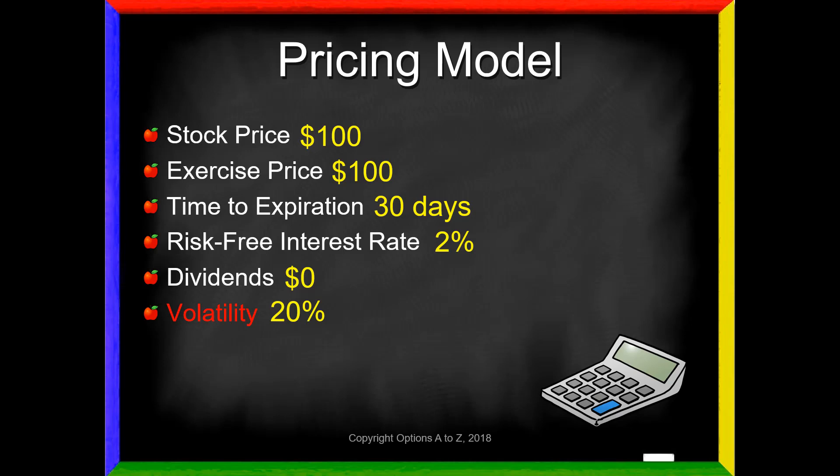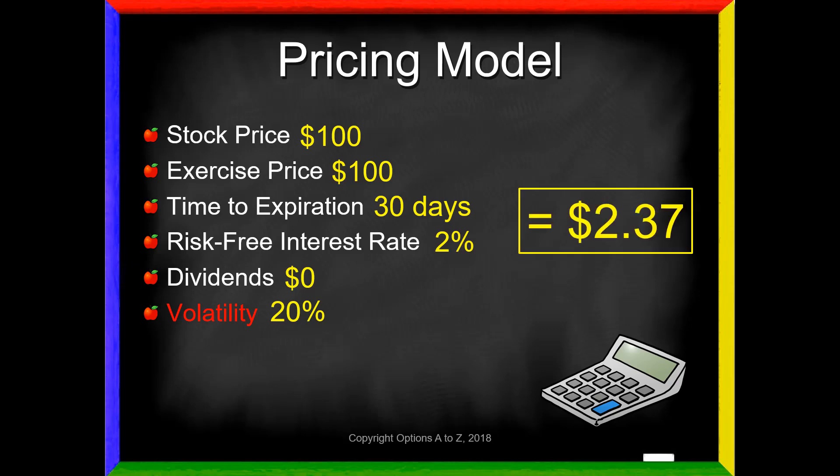If you recall in that video, I talked about an option pricing model, and the Black-Scholes, which is still probably the most widely used, is going to ask for these six figures: the stock price, exercise price, time to expiration, risk-free interest rate, dividends, and then volatility. And if we give it those numbers, it's going to shoot out a price. If you use these numbers, it would tell you that the call option is theoretically worth $2.37.